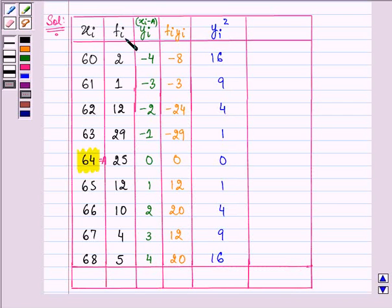Then multiply fi with yi whole square also and on doing so we have 2 into 16 giving us 32, 1 into 9, then we have 12 into 4, 48 and so on, 29, 0, 12, 40, 36 and 80.